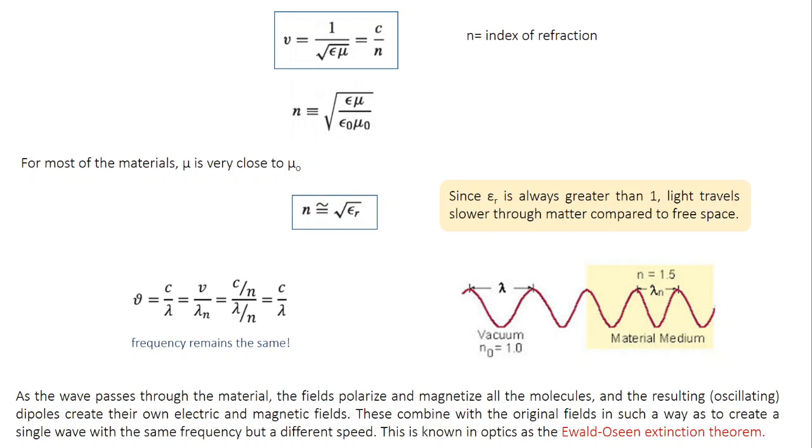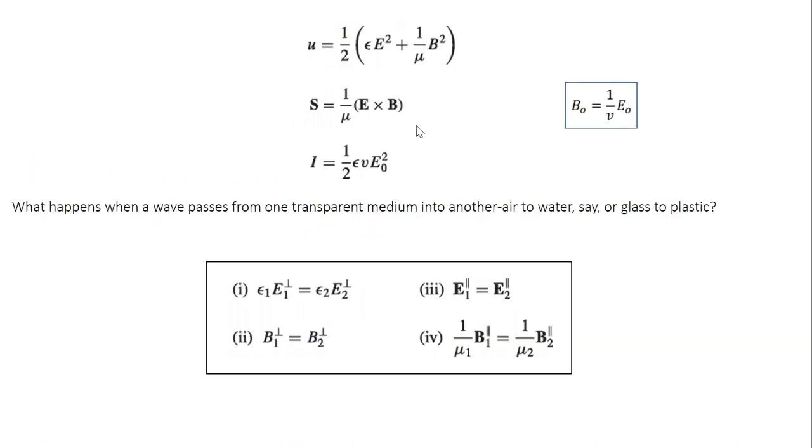So once you derive the wave equation in matter and also derive the expression for velocity, you can do the same procedure for all the energy parameters. So this is quite straightforward. I hope you remember the energy parameter for the free space case. Simply replace epsilon 0 with epsilon, mu 0 with mu and C with V.